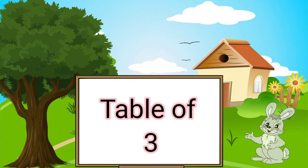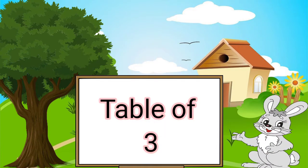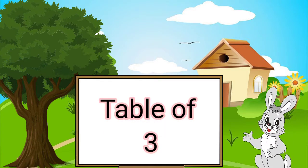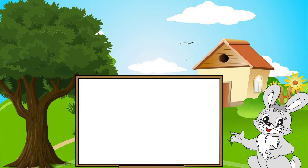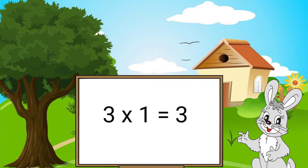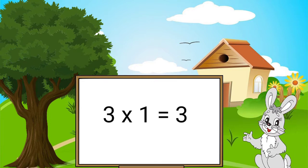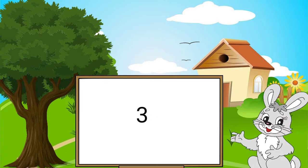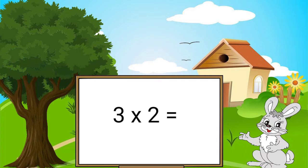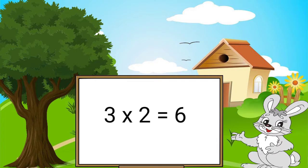Table of three. Three ones are three. Three twos are six.